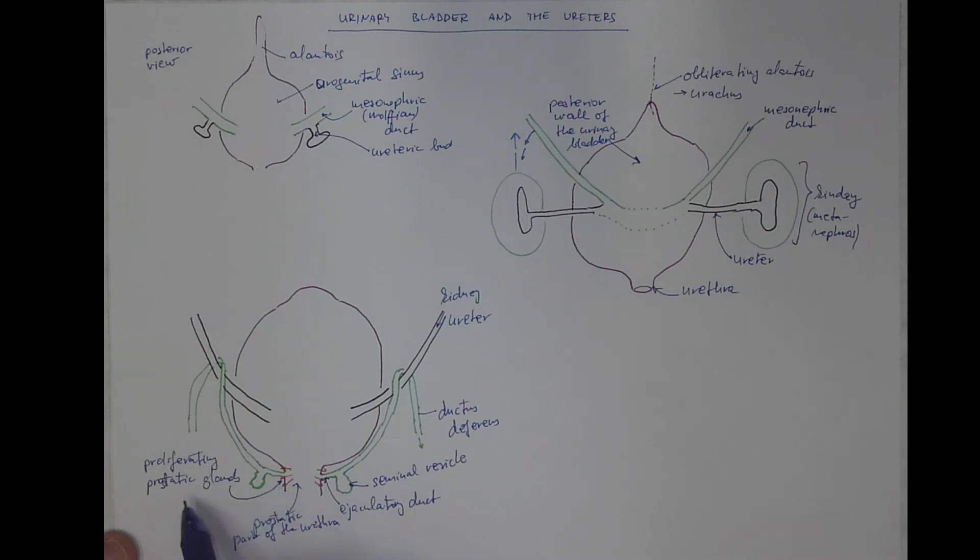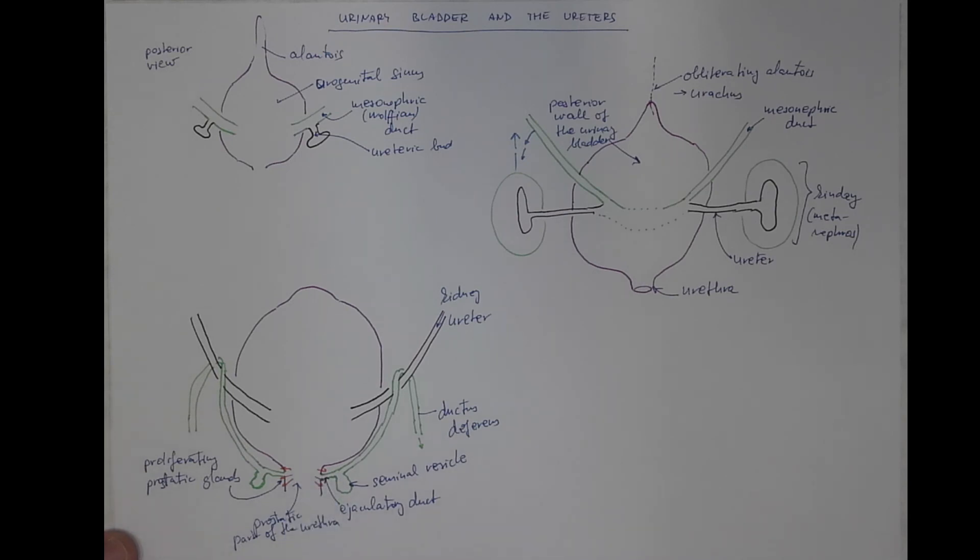But the mesenchyme into which the glands are proliferating, they will differentiate into the fibromuscular stroma of the prostate gland as such because the prostate gland is made of like 30 to 50 prostatic glands and that's to illustrate their embryonic origin.